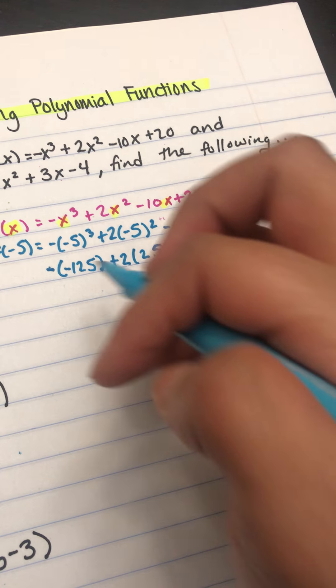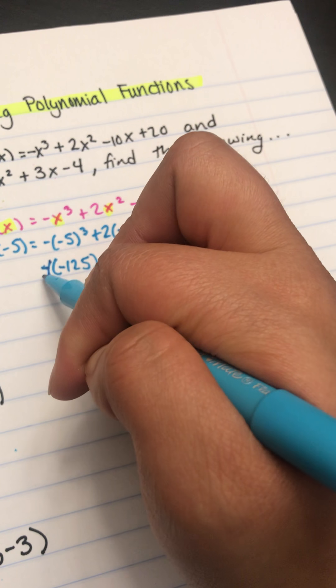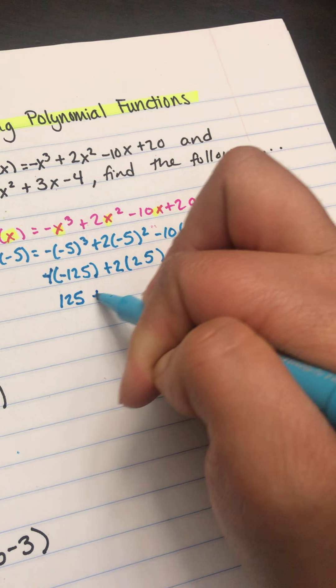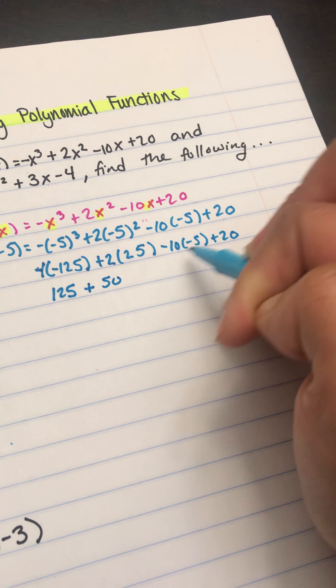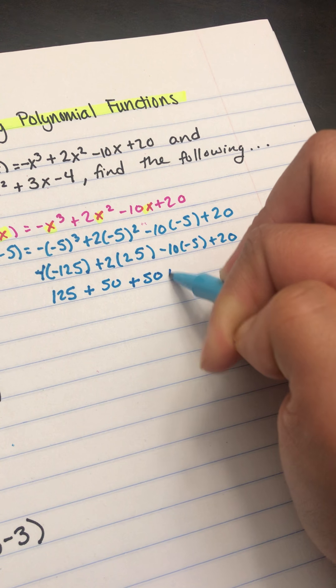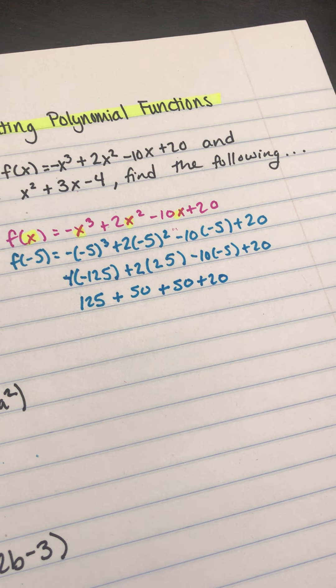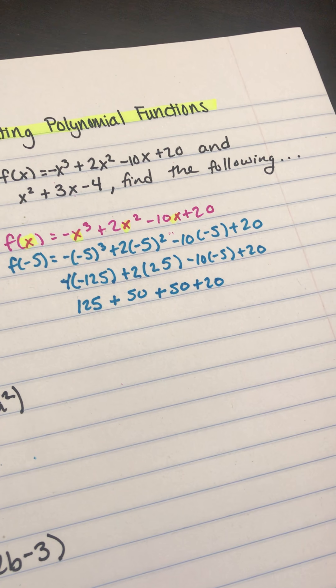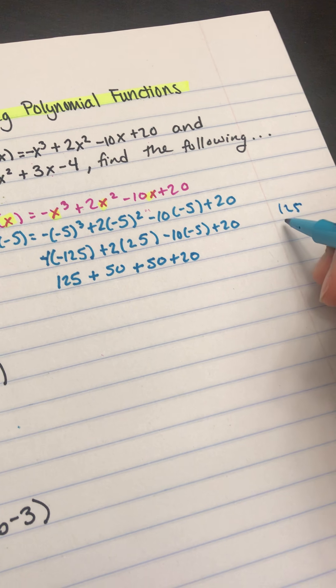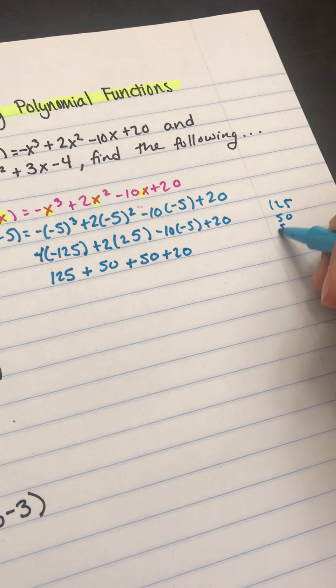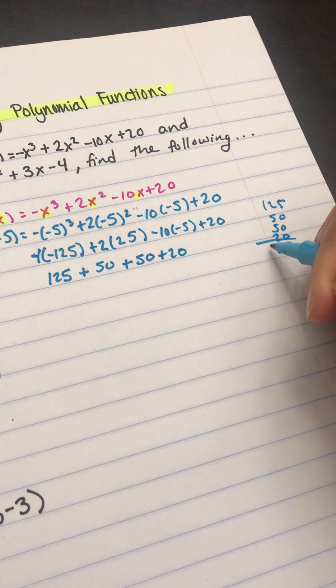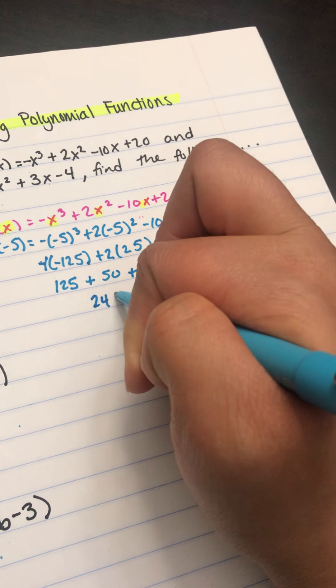Next, I'm going to do the multiplication part. So here, negative 1 times negative 125 becomes positive 125. 2 times 25 is positive 50. Negative 10 times negative 5 is also positive 50. And here we have the positive 20. So if you add those all together, you'll get 125 plus 50 plus 50 plus 20 equals 245.